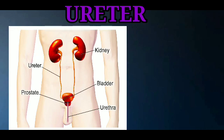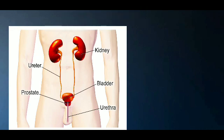The ureter is the tube which conveys the formed urine from the kidneys to the urinary bladder. The length of the ureter in adults is around 25 to 30 centimeters.